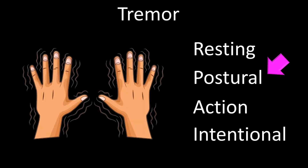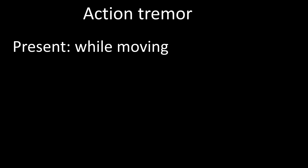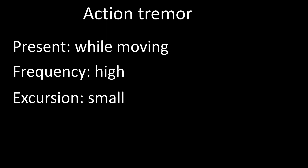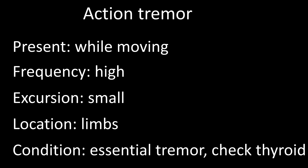Action tremor is worsened by or only present during movement. It is high frequency, with small excursion, and most often involves the limbs. This tremor usually occurs in conjunction with postural tremor in essential tremor. Both components — postural and action tremors — are worsened by anxiety and improved by alcohol (not recommended) and beta blockers. Action tremor may also occur in association with hyperthyroidism.